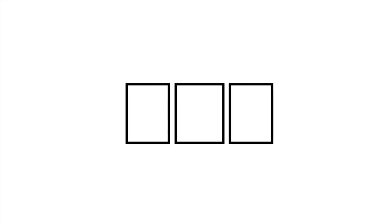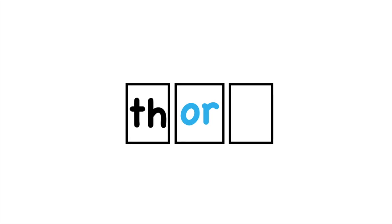The next word we are going to try spelling is the word THORN. The first sound in THORN is TH, and two letters make that sound: T and H. Now the next sound in THORN is OR, and that is made by O-R. Finally, the last sound is N, and I know that sound is made by the letter N.